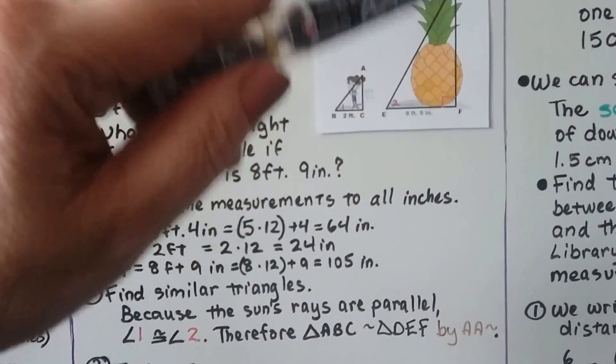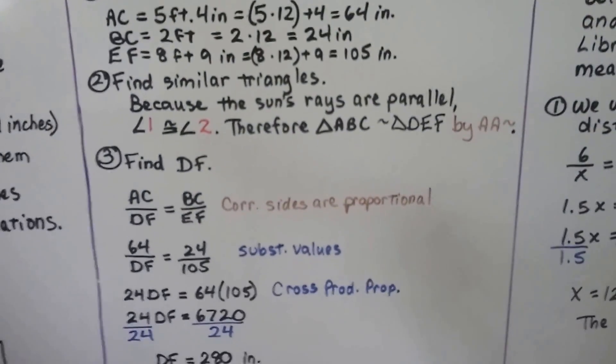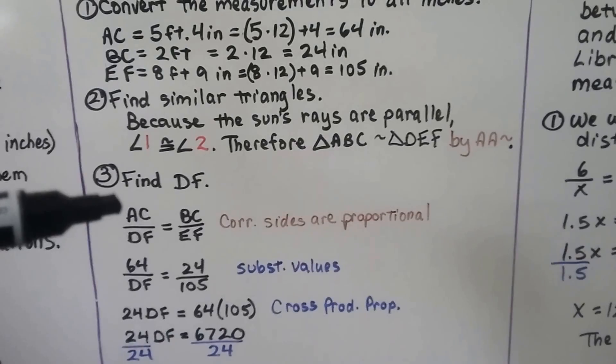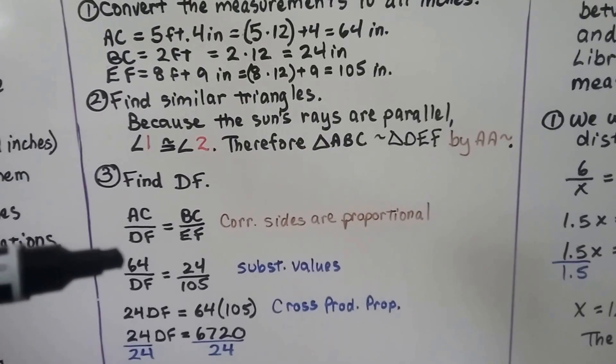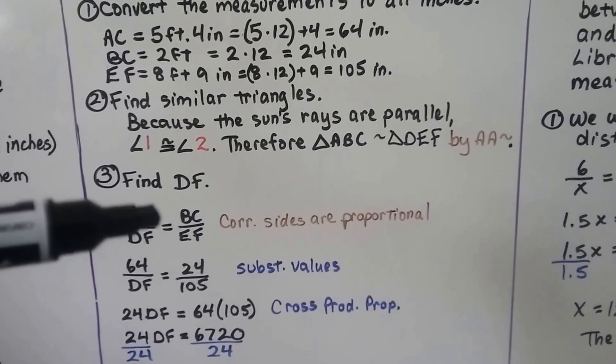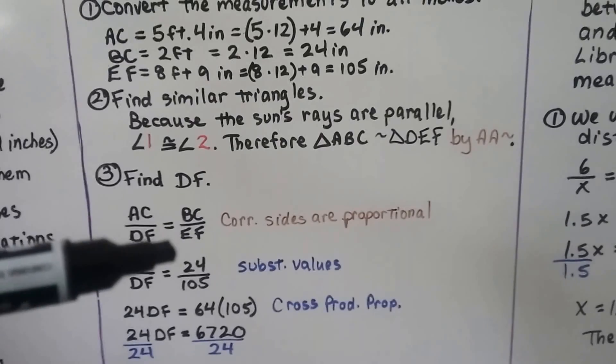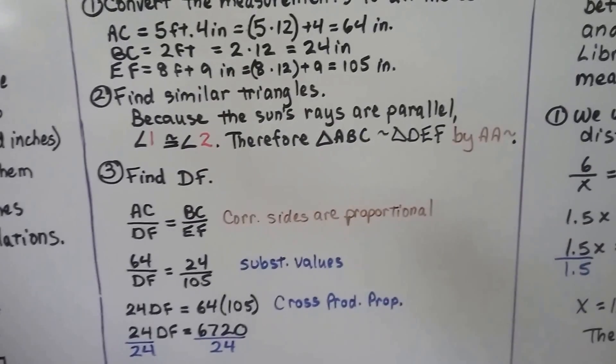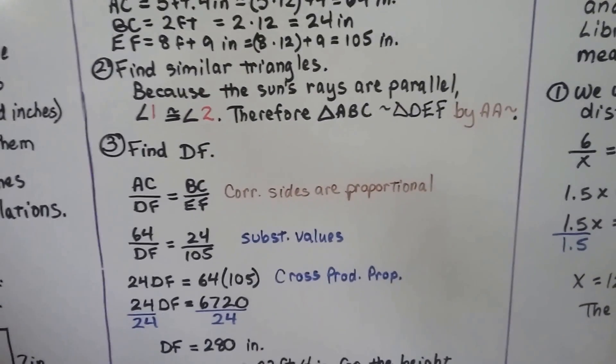Now we need to find DF. We write our proportion: AC, her height, over DF, the height of the pineapple, is equal to BC, her shadow, over EF, the shadow of the pineapple. That's corresponding sides are proportional.